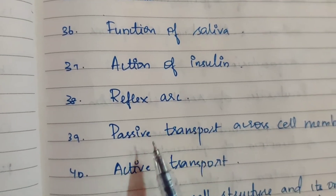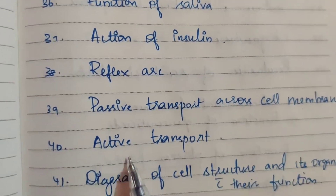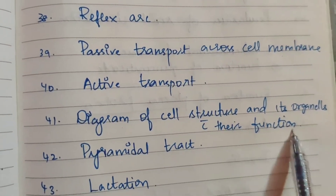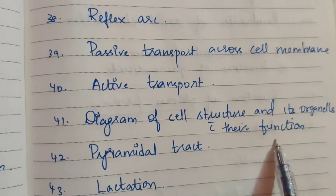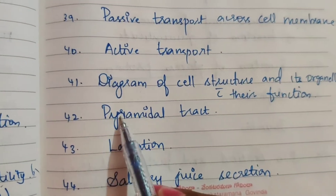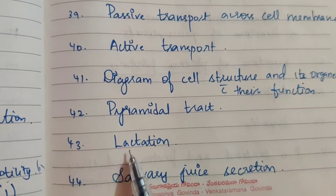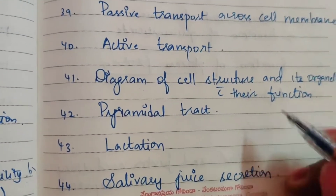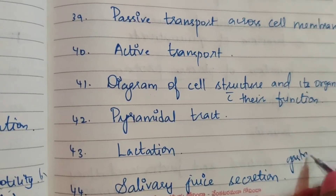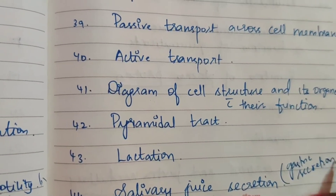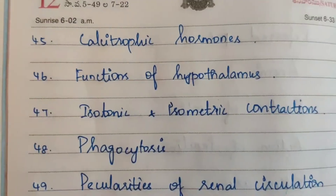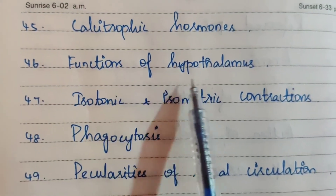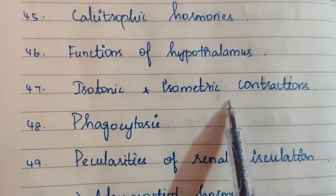Thirty-fifth: referred pain. Thirty-sixth: anemia. Function of saliva. Action of insulin. Reflex arc. Passive transport across cell membrane. Active transport. Diagram of cell structure and its organelles with their functions.